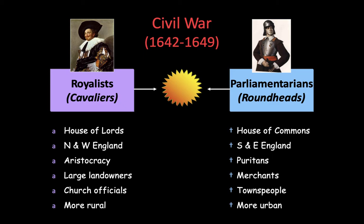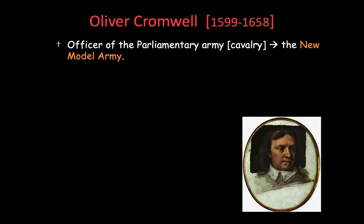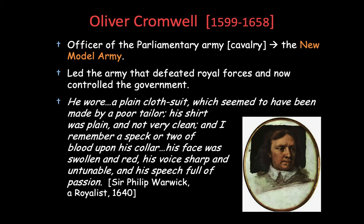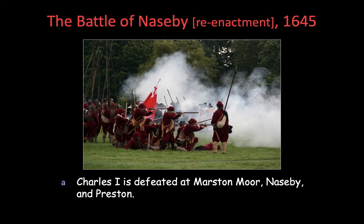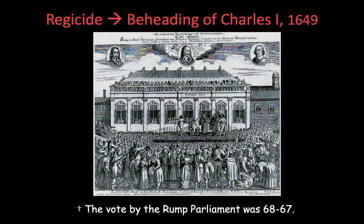The Roundheads were called that because they did not wear the white wigs of the time. Oliver Cromwell becomes their leader, rising through the military with the New Model Army. He defeats the royal forces, captures the government, and captures King Charles I. At the Battle of Naseby in 1645, Charles is captured, handed over to Parliament, put on trial, found guilty of treason, and beheaded. This is the end of the English Civil War.